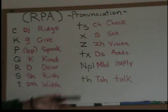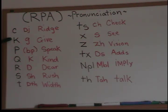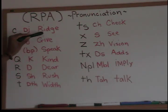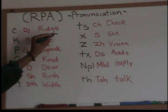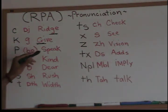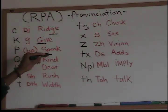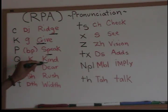This is the RPA pronunciation. I like how this book is set up — it gives you the letter, then the pronunciation of the letter, and then an English word as a similar pronunciation example. Starting with the letter C — in Hmong RPA, C makes a J sound, as in the end of the word 'ridge.' D is also a J sound. K is a G sound, as in 'give.' P sounds like the P in 'speak.' Q is a K sound, as in 'kind.'